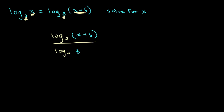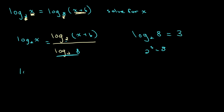On the left side we still have log base 2 of x. As you can see, we now have the same base on either side. Log base 2 of 8 — since 2 cubed equals 8 — is equal to 3. So we get log base 2 of x is equal to log base 2 of (x plus 6) over 3.